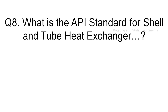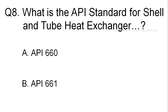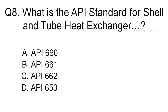Question 8: What is the API standard for shell and tube heat exchanger? Option A: API 660. Option B: API 661. Option C: API 662. Option D: API 650.